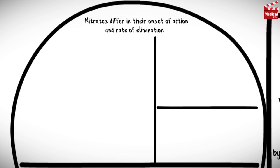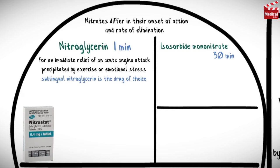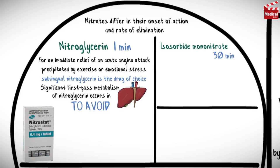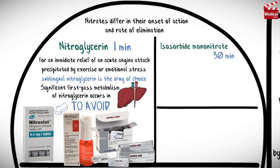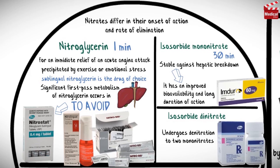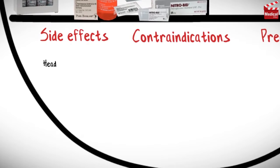There are three drugs in this class, differing in onset of action and rate of elimination. Onset ranges from one minute for nitroglycerin to 30 minutes for isosorbide mononitrate. For immediate relief of an acute angina attack precipitated by exercise or emotional stress, sublingual nitroglycerin is the drug of choice — it is essential for patients with angina to carry nitroglycerin tablets at all times. Due to significant first-pass hepatic metabolism, nitroglycerin is commonly administered via the sublingual or transdermal route as a patch or ointment. Isosorbide mononitrate is stable against hepatic breakdown, giving it improved bioavailability and a long duration of action.